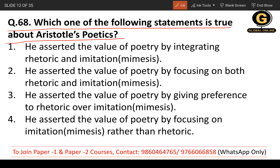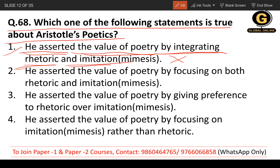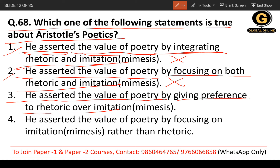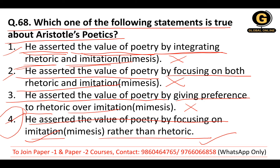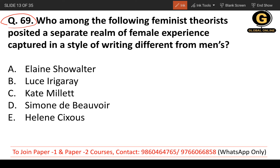Question 68: Which one of the following statements is true about Aristotle's Poetics? He asserted the value of poetry by integrating rhetoric and imitation — no. He focused on both rhetoric and imitation — no. He gave preference to rhetoric over imitation — no. He asserted the value of poetry by focusing on imitation rather than rhetoric — correct. The fourth option is the correct answer.